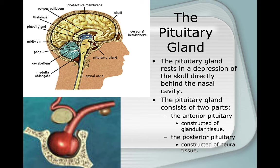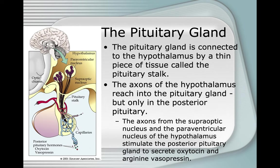The pituitary gland rests in a depression of the skull directly behind the nasal cavity. It consists of two parts: the anterior pituitary, constructed of glandular tissue, and the posterior pituitary, constructed of neural tissue. The pituitary gland is connected to the hypothalamus by a thin piece of tissue called the pituitary stalk. The axons of the hypothalamus reach into only the posterior pituitary.